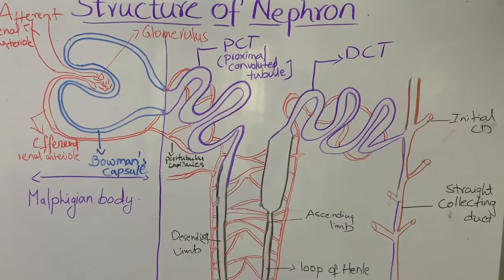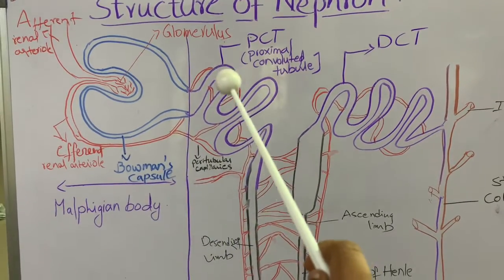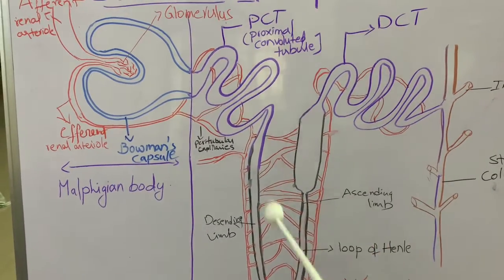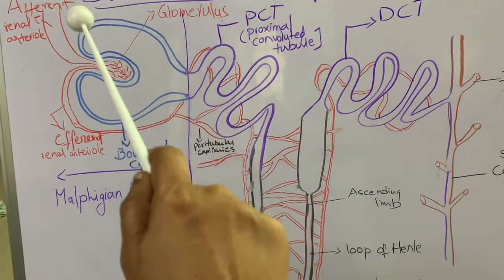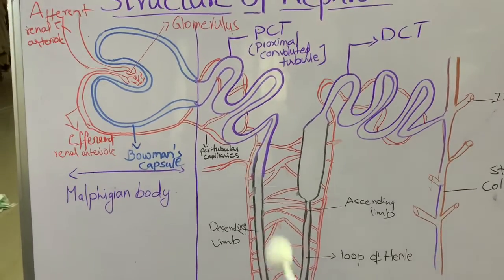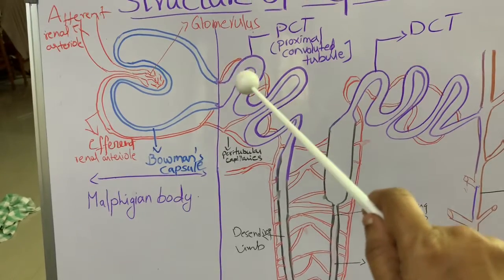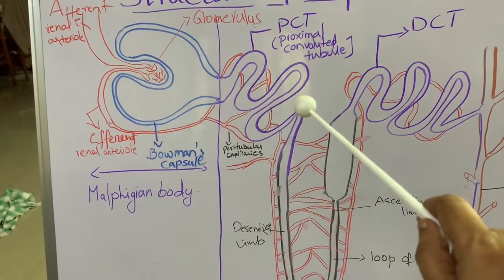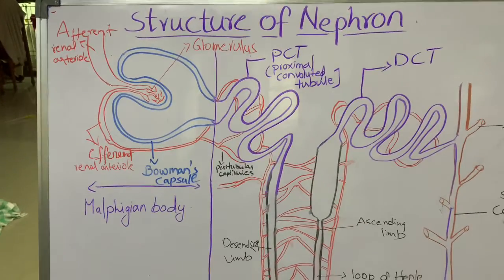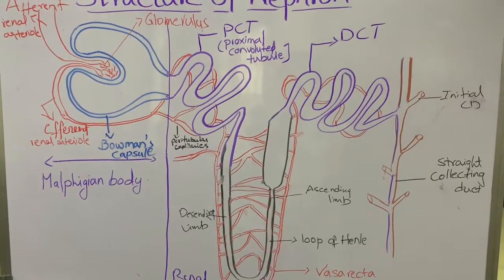The blind end of the renal tubule is modified into a cup-like structure — the Bowman's capsule. The Bowman's capsule leads into a highly coiled tubular structure known as the proximal convoluted tubule, or PCT. Whenever 'convoluted' appears, remember it refers to a coiled structure.